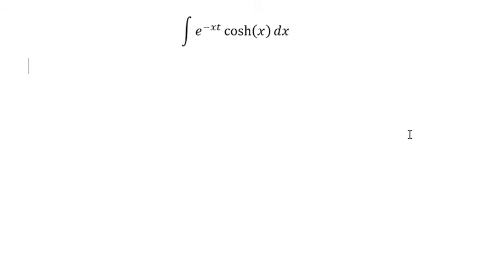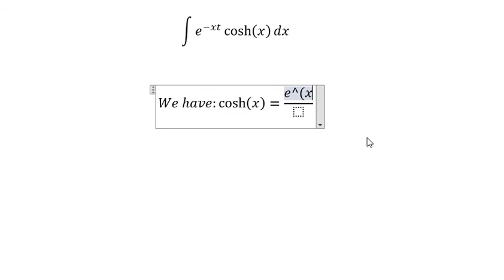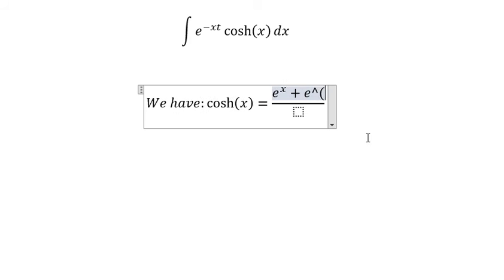We have the formula in here. Cos x equals e to the power of x plus e to the power of negative x over 2.